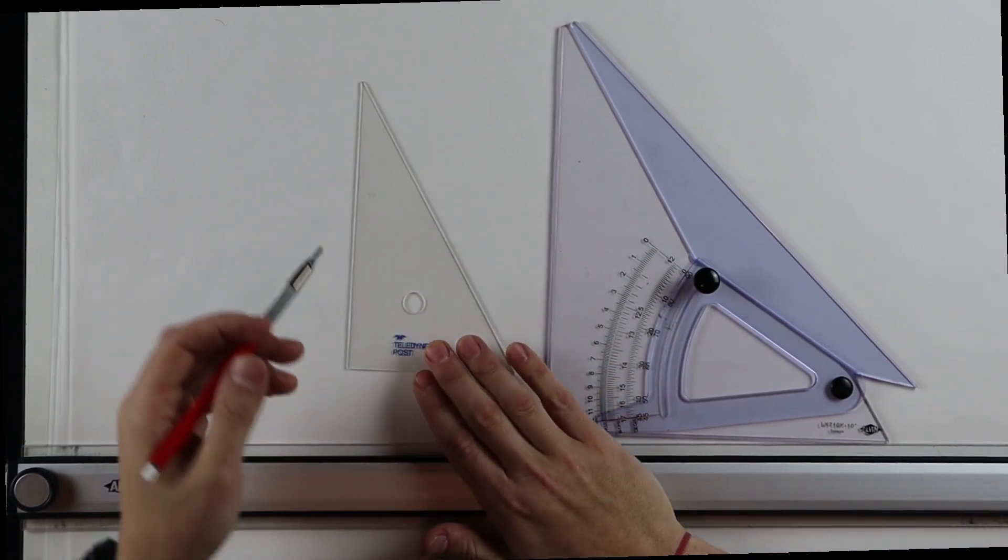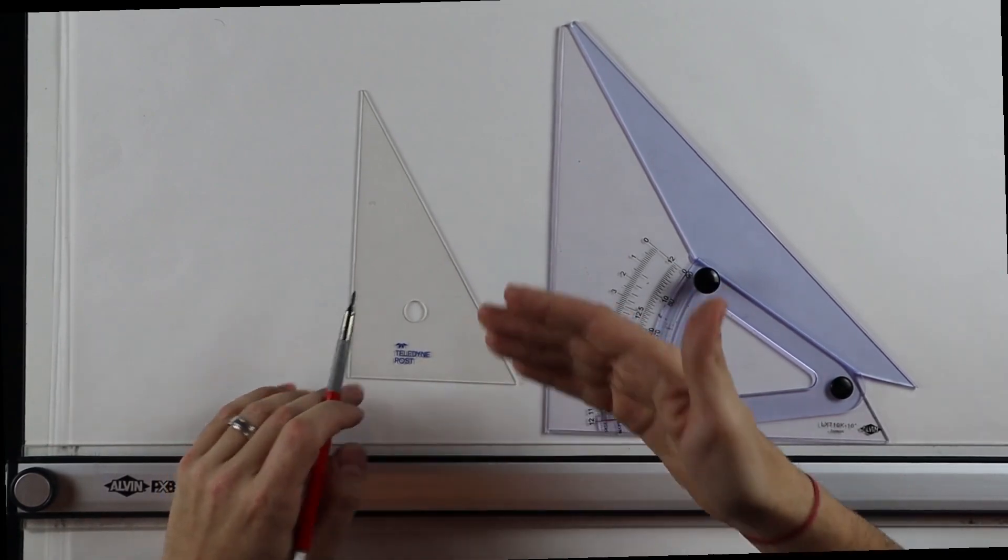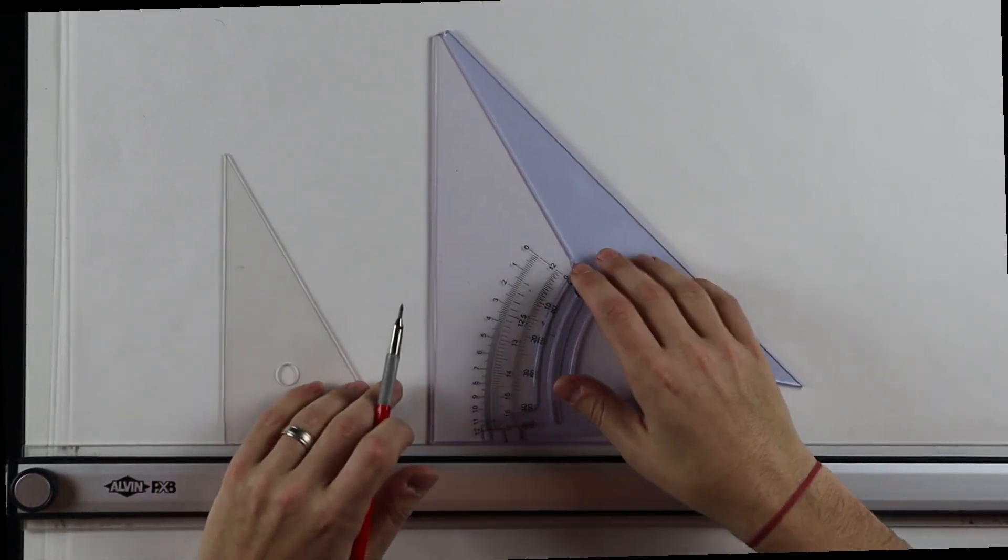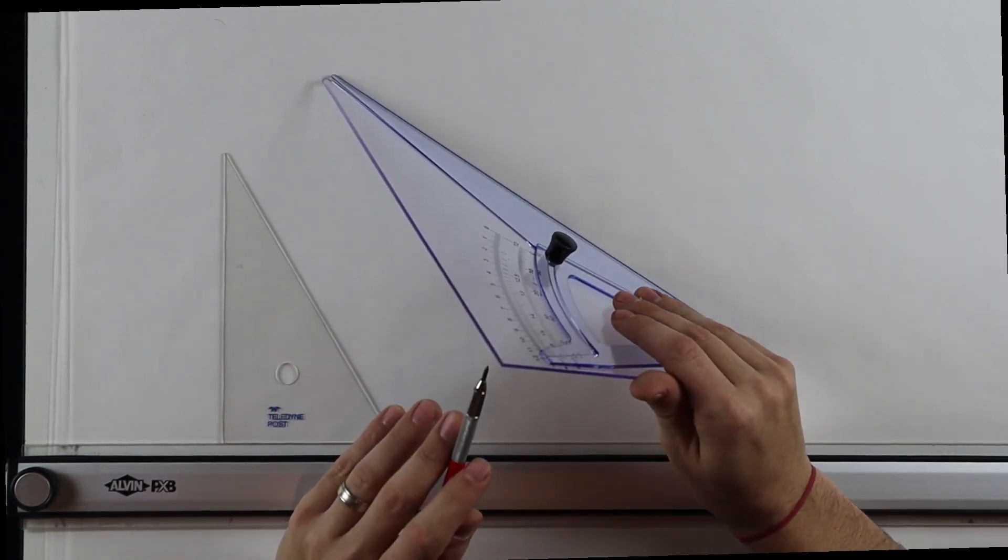The reason for that is ink can bleed underneath the actual triangle and then when I go to move the triangle around, it'll smudge. So when you're drafting and inking something with a triangle, you want to make sure that you're using something with a beveled edge. Now the adjustable triangle has that.